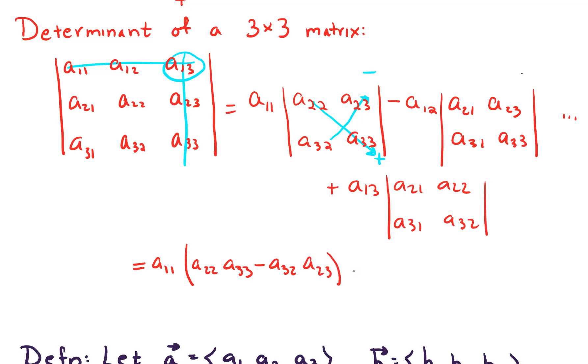Minus A12 times our little 2 by 2 determinant here. That gives us A21 and A33, minus A31, A23, plus A13 times A21, A32, minus A31, A22.